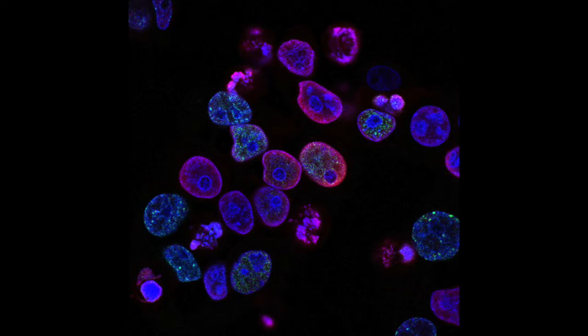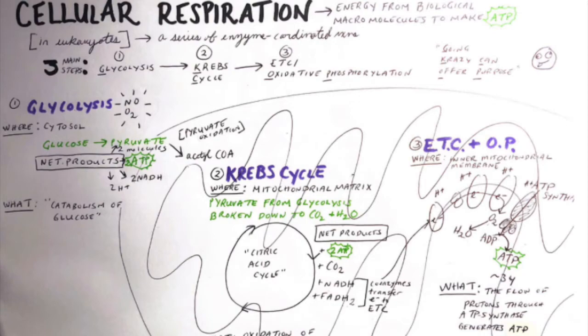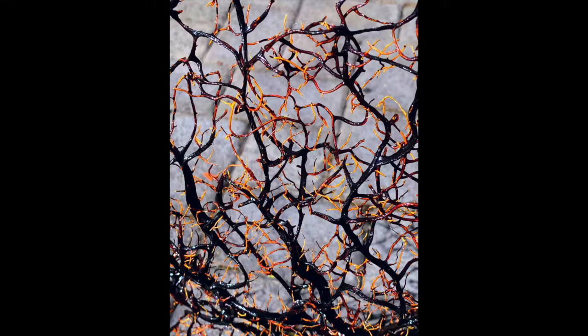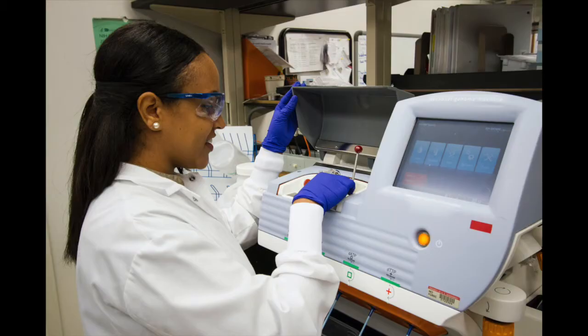The mitochondria is a site of a series of very specific biological reactions, and the process is called cellular respiration. That respiration is what gets us ATP, which is the molecule of energy in the cell. A lot of students get these steps mixed up along the way, and I get it.